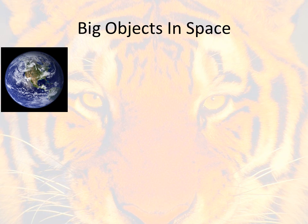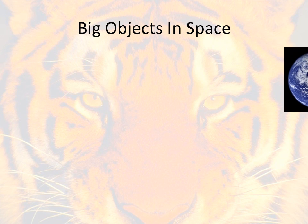First off, we want to think about big objects in space — like the moon, our planet Earth, or any of the other planets. And we want to think about what they really want to do. Honestly, what they really want to do is travel in a straight line. If you're in outer space, once you get moving, you would travel in a straight line forever. There's really nothing to stop you. So in your notes: what do big objects really want to do? The answer is very simple — they want to go straight.